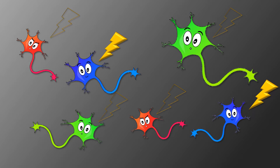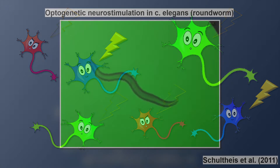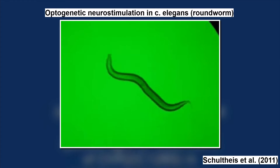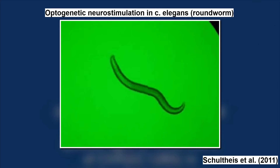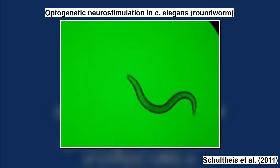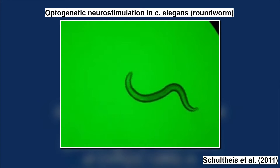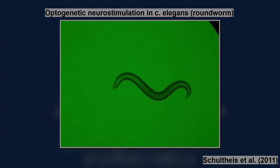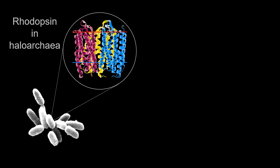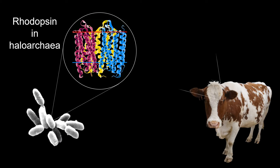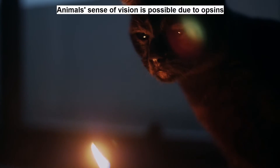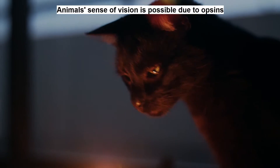The main way in which optogenetics modulates neural activity is through light. It does this through activation of light-sensitive proteins called opsins. Such light-sensitive proteins can be found throughout nature, from archaebacteria to mammals. These photosensitive proteins help these organisms to detect sources of light, which is crucial for their survival.